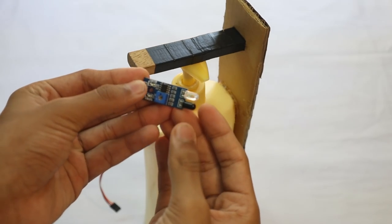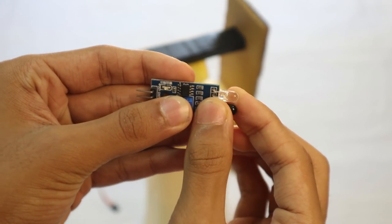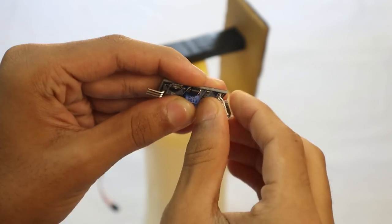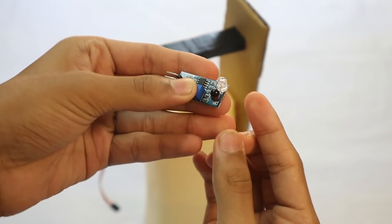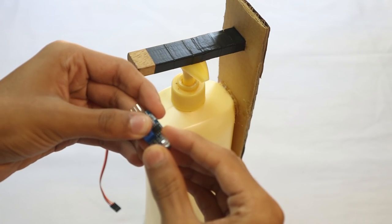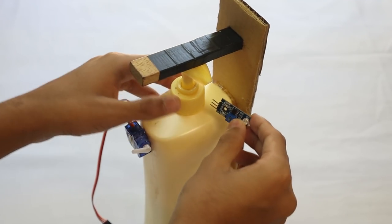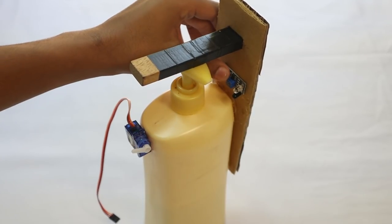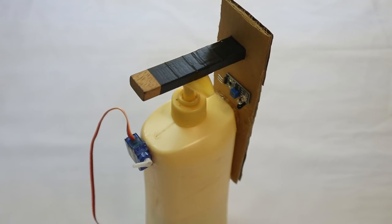Now the next step is to put your IR sensor. You should bend these like that. Careful not to break it. Now after bending it, you need to put the IR sensor on the cardboard like that. After hot gluing the IR sensor, the next step is to connect the wires of the IR sensor.